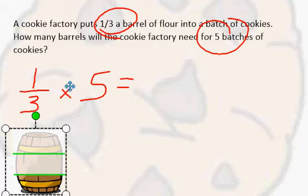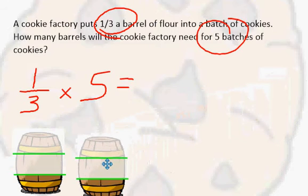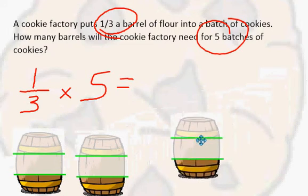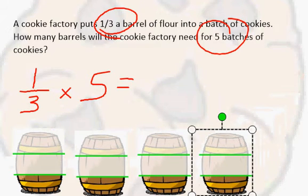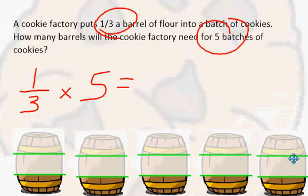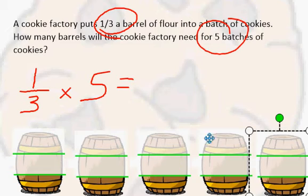So we have five groups of one third. So I'm going to get four more of those: two, three, four, and five. So I have five barrels, one through five, and that's only one third in each barrel.